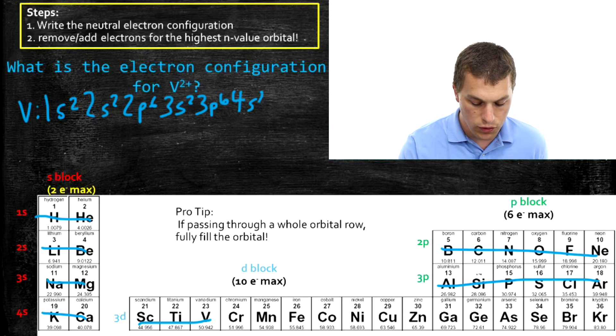Finally, to the 4S2, and then into 3D, and there's just three electrons in that 3D.